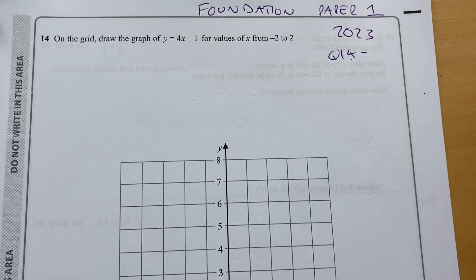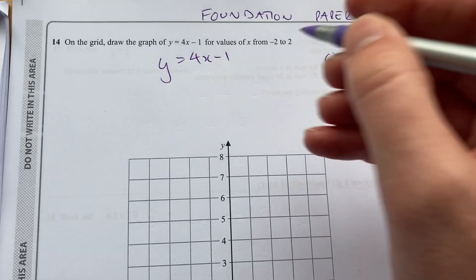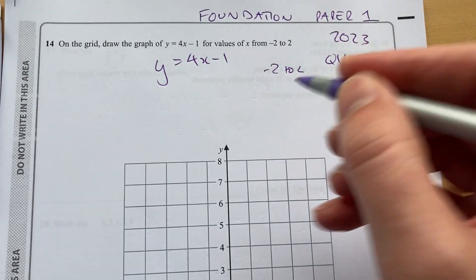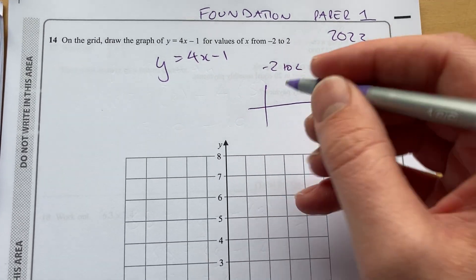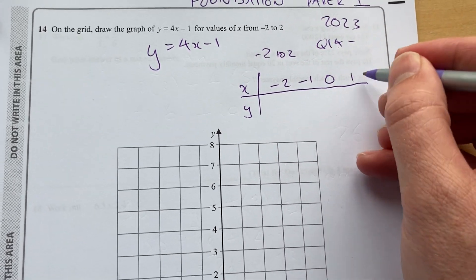So on the grid, we've got to draw the graph of y equals 4x minus 1 from minus 2 to 2. So I'm going to draw a quick table. x and y, minus 2, minus 1, 0, 1, 2.